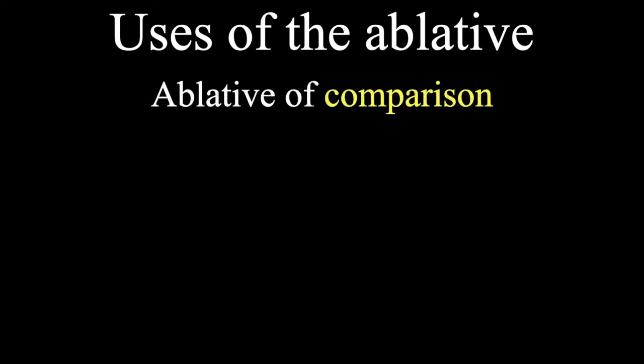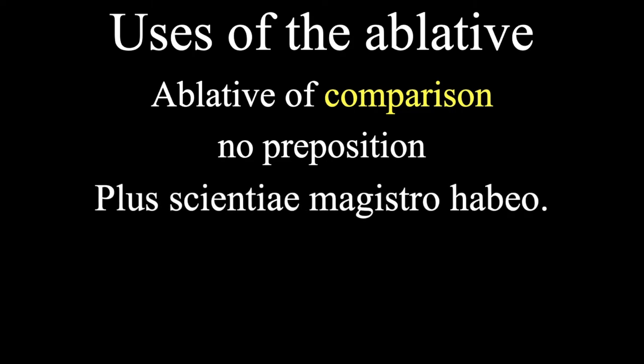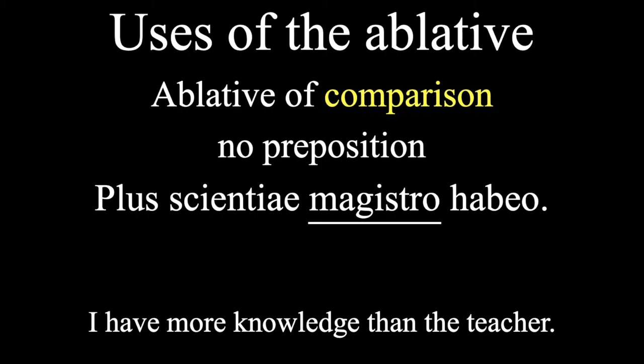Next. The ablative of comparison, which as the name would imply, is used to compare things. No preposition. And since we're drawing comparisons, we will add the word than. So, if we get the phrase, plus scientiae magistro abeo, the ablative is magistro, right here. And this means, I have more knowledge than the teacher.